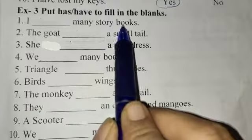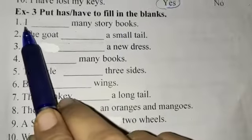First, I blank many story books. Here, pronoun I is given and with I we use have.